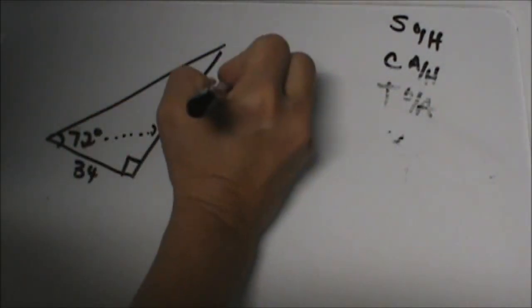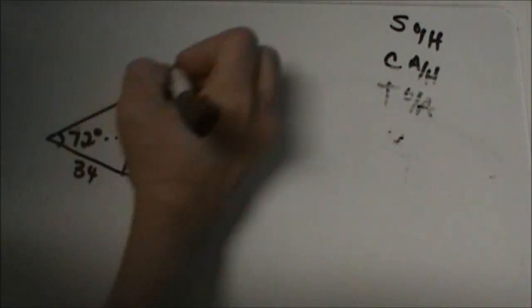So from the 72 degree angle, x is our opposite. This is our hypotenuse. This is our hypotenuse. And this one is our adjacent. Okay?